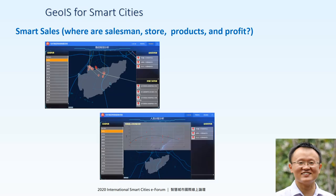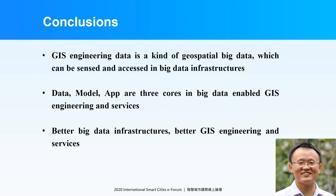Here are the conclusions. The GIS engineering data is a kind of geospatial data which can be sensed and accessed in big data infrastructure. So data, model, and APP are three cores in big data-enabled GIS engineering and service. If we have better big data infrastructure for engineering data and for computational data, then we can have better GIS engineering and service.